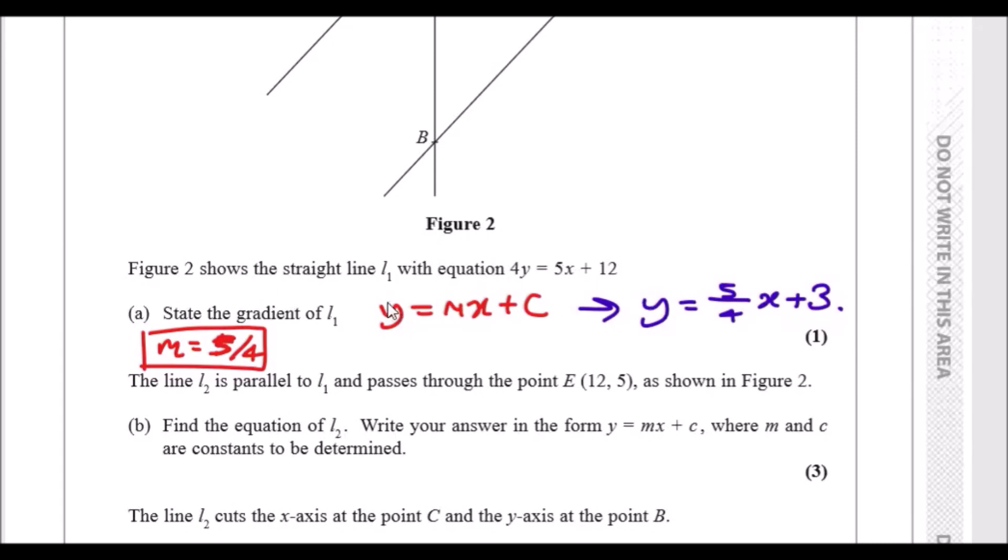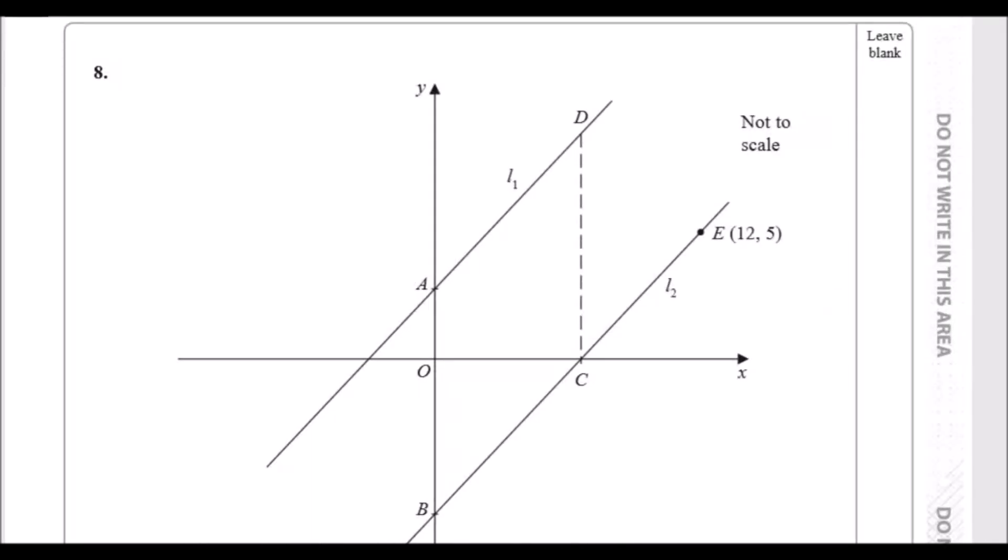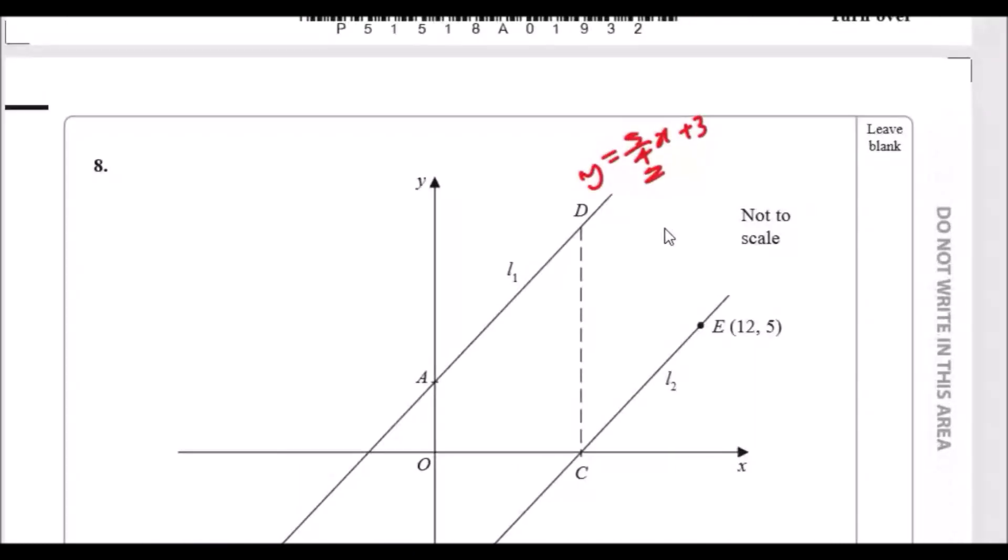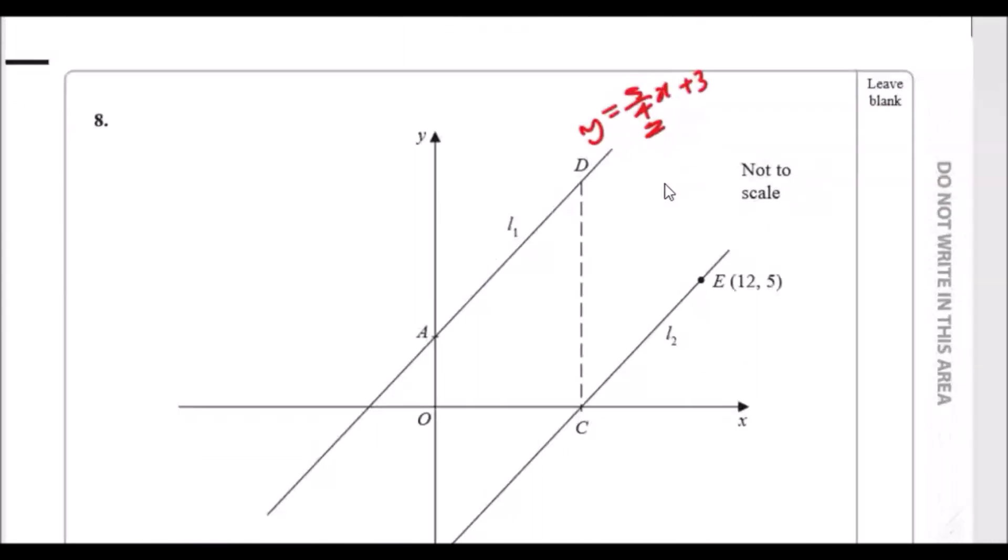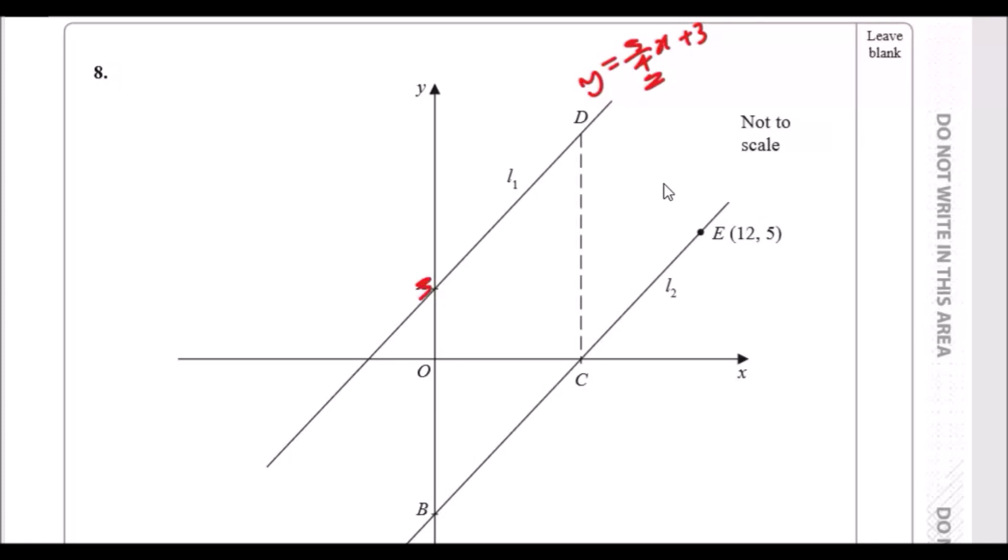The reason why this is easy is because they've pretty much spoon-fed it for you. The equation of a straight line is always y = mx + c where m is the gradient. Because this is 4y, you would have to firstly get rid of 4 because it needs to be y equals. If you divide this all by 4, you should get 5/4x plus 12 over 4 which is 3. You can clearly see that the m value here is 5/4. The first line here is y = 5/4x + 3 where 5/4 is the gradient, so m = 5/4. This plus 3 tells you that the y-intercept is 3, so corner A is at (0, 3).